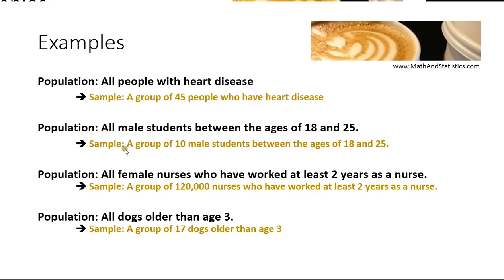As it would be if we had a large sample size, like in the third example. The population is all female nurses who have worked at least two years as a nurse — a possible sample from this population might be a group of 120,000 nurses who have worked at least two years. Our final example: the population is all dogs older than age 3, and a possible sample might be a group of 17 dogs older than age 3. A population represents every single person, student, nurse, dog, or whatever entity you're dealing with — every single one in the particular group of interest.